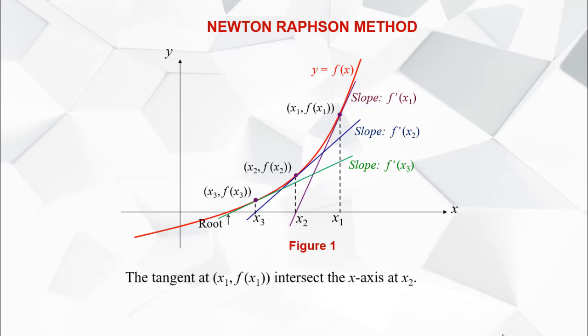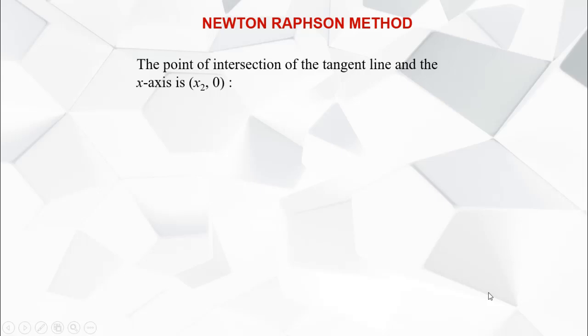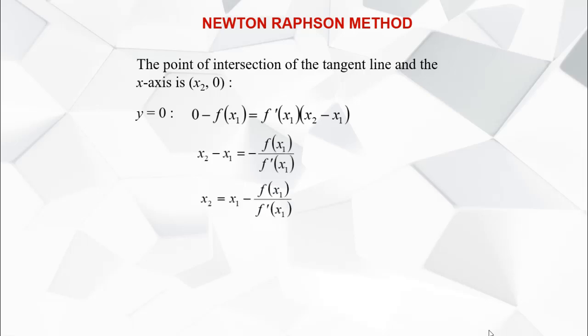Given x sub 1, how do we find x sub 2? The tangent line at x sub 1 intersects the x-axis at x sub 2. The equation of the tangent at the point (x sub 1, f(x sub 1)) is: y minus f(x sub 1) equals f prime(x sub 1) multiplied by (x minus x sub 1). To find the intersection, we solve the tangent line equation and the x-axis equation y = 0 simultaneously. Substituting y = 0 and isolating x sub 2 gives x sub 2 equals x sub 1 minus f(x sub 1) over f prime(x sub 1).